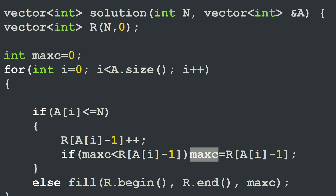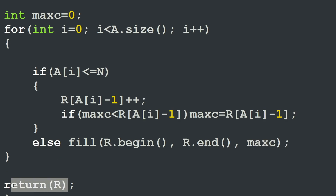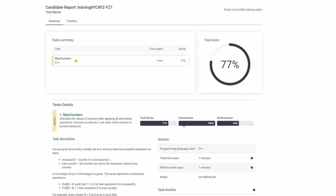Now if the element a[i] is not in the range — not less or equal to n — I have to max out all the counters of all elements of the array. In this case I simply use the fill function to fill the results vector from beginning to end with the value of the maximum counter. We keep looping over all elements of array a until finished, then return vector r as a result. It works perfectly fine — it gives us a correctness score of 100%. However, the total score is only 77% because the performance score is not enough, around 60%.